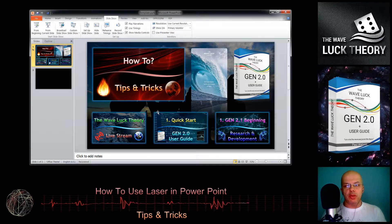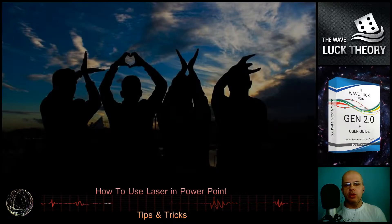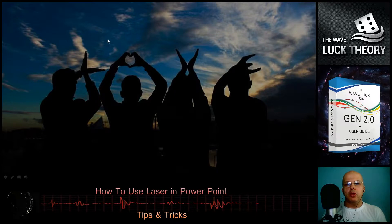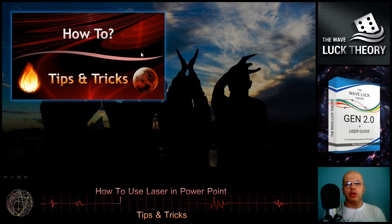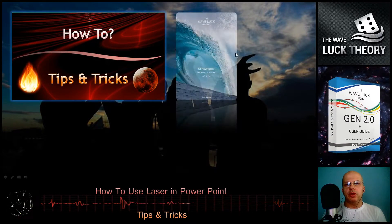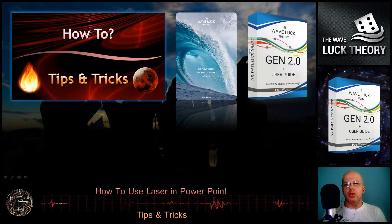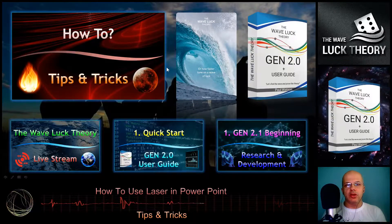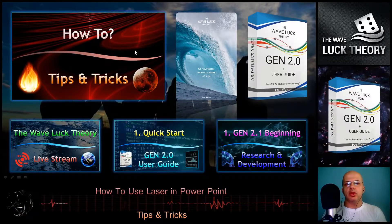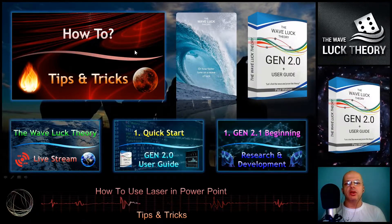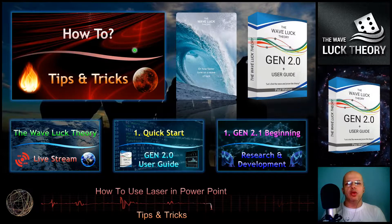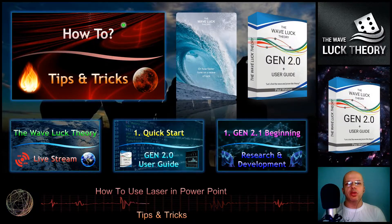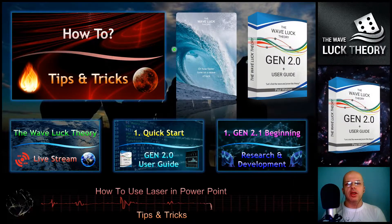When we start the slideshow by clicking F5, we have the mouse pointer like we normally do, but we can switch to the laser by holding the Ctrl key and the left mouse button, and it will change to the laser pointer in green color.